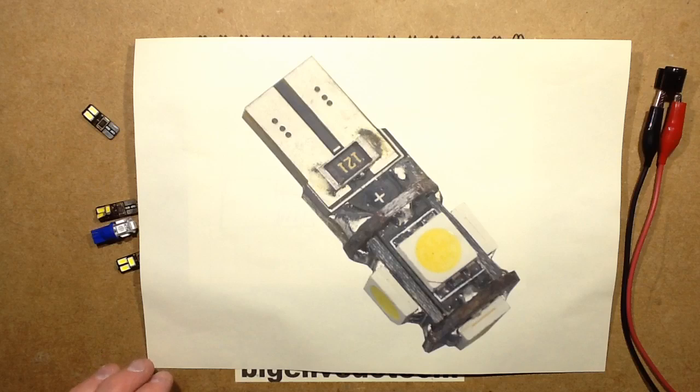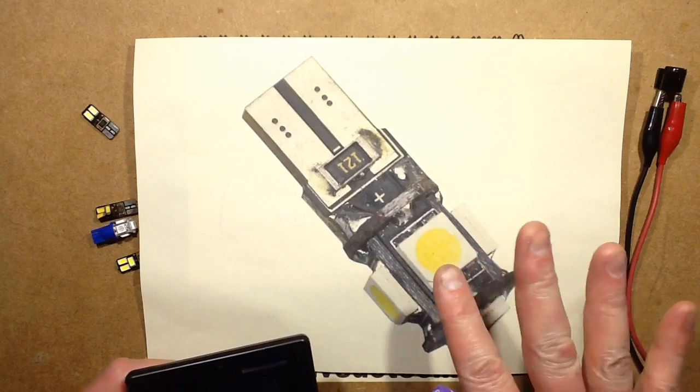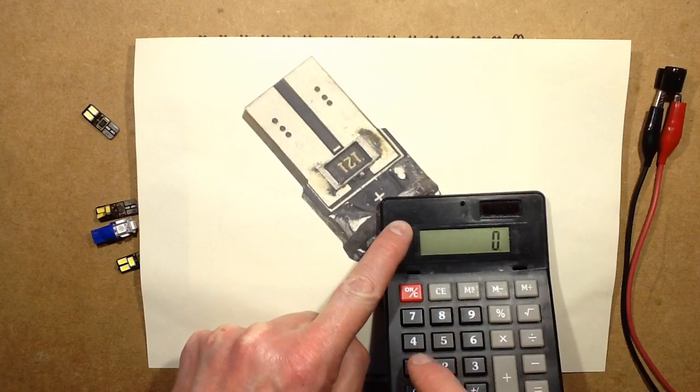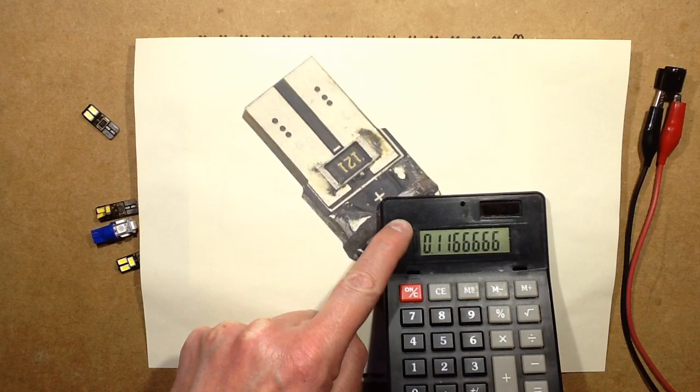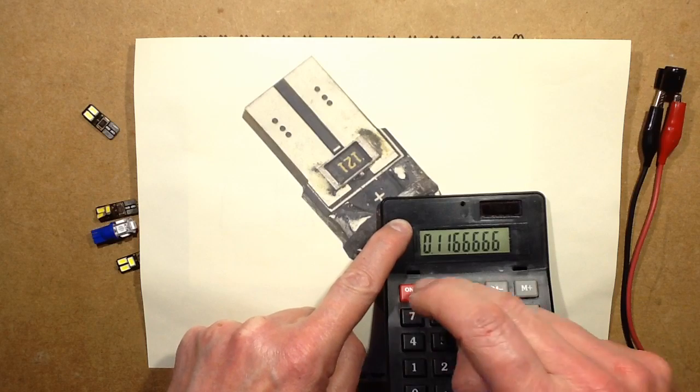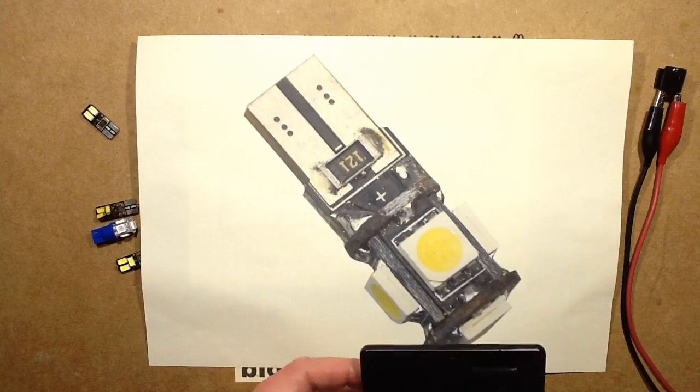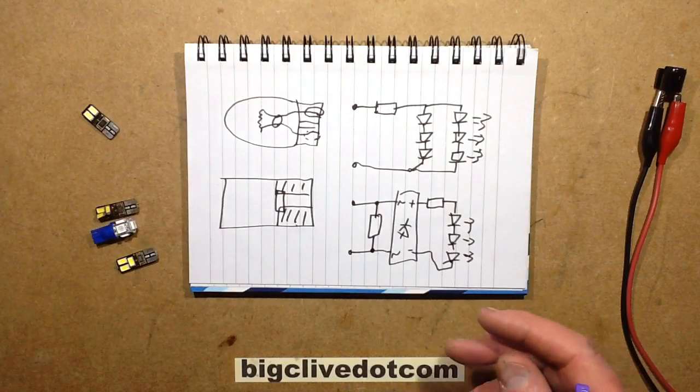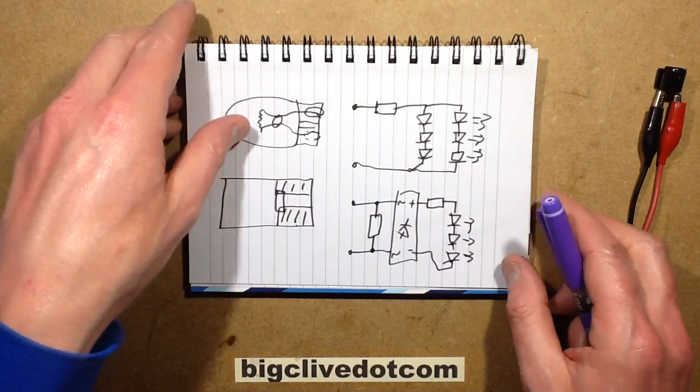Now if you consider that typically the voltage in a car while it's running is going to be approximately 14 volts, might be higher might be lower, but approximately 14 volts, then 14 volts divided by 120 ohms equals 116 milliamps. And when you multiply that by the 14 volts you're going to get 1.6 watts. That's quite a lot of power. The original lamps would have been rated one or two watts, but it's still going to generate a lot of heat.